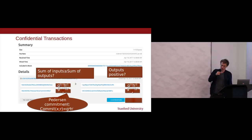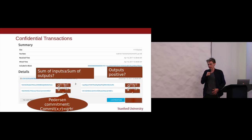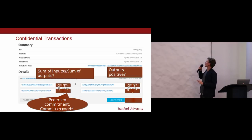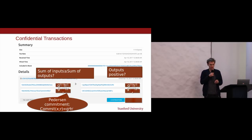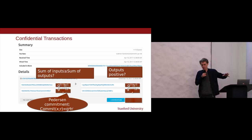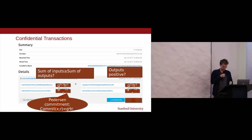A commitment to a number x using randomness r looks like: C = g^x · h^r, where the discrete logarithm between g and h is unknown. Instead of sending 533 units, I commit to the number 533 using some randomness. This perfectly hides the amount I've committed to. But if I want to open it later, I can only open it to the amount I previously committed to. So now we have confidential transactions with these commitments that don't reveal the amounts being sent.